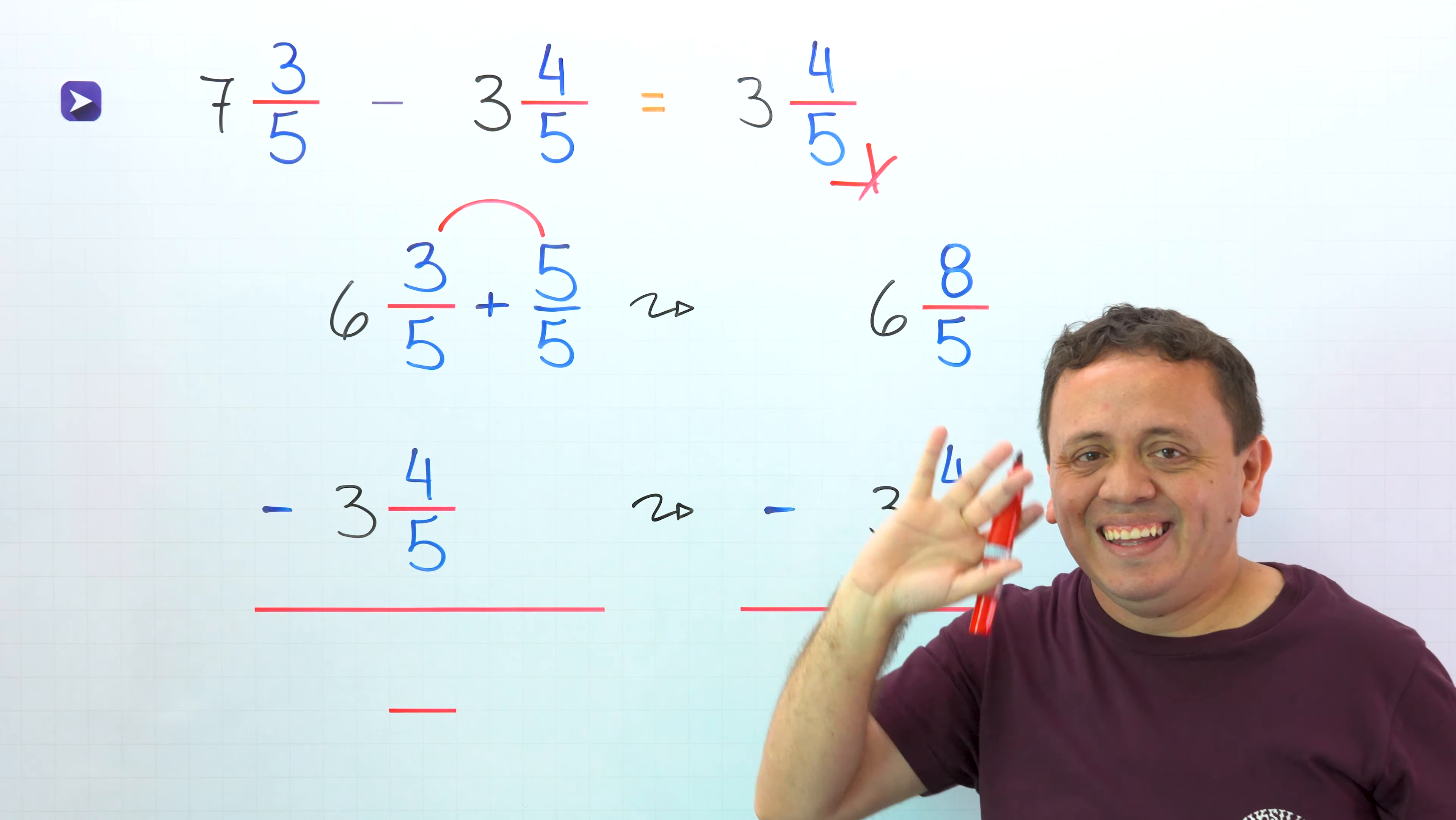So first, we put the mixed number 7 and 3 fifths, then comes the minus sign, and finally the second mixed number 3 and 4 fifths.